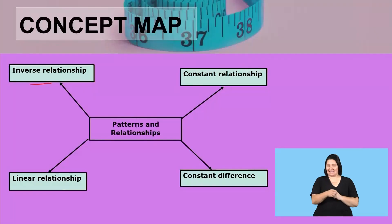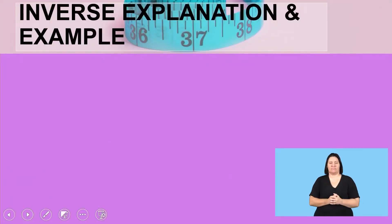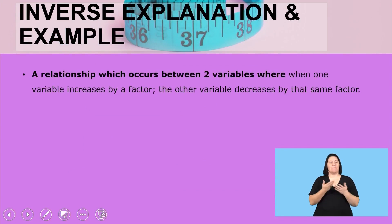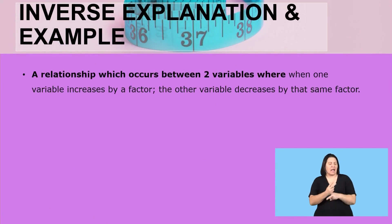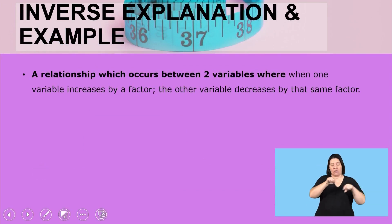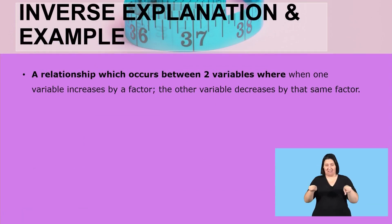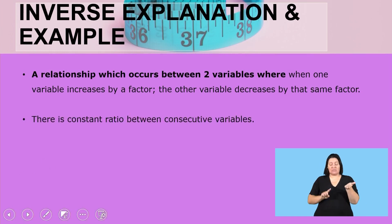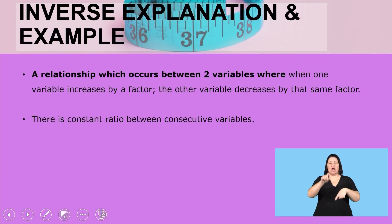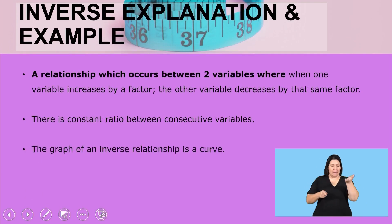Welcome back. The last section is inverse relationships. We've done this in the previous section — this is just to remind you. A relationship which occurs between two variables where when one variable increases, the other one decreases, and there's a constant ratio between the two consecutive variables.